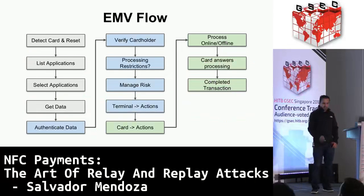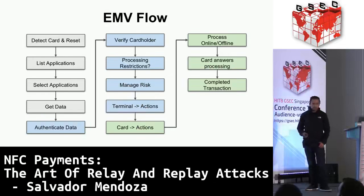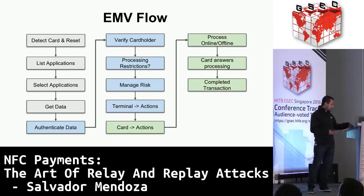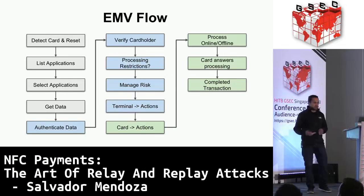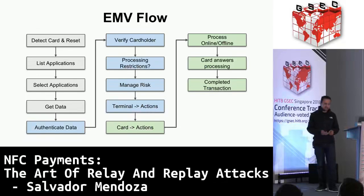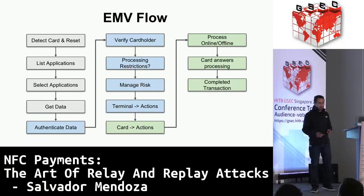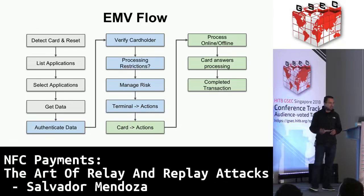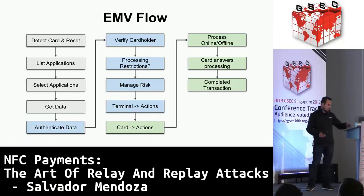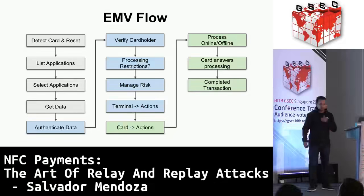So what is the EMV flow for this kind of transaction? The terminal detects the card and it boots up, it detects the application - could be MasterCard or any kind of card you're using. You get the data processing restrictions and some actions at the terminal. After all of this, the transaction has to be finished - it could be declined or it could be accepted, but it has to be finished.